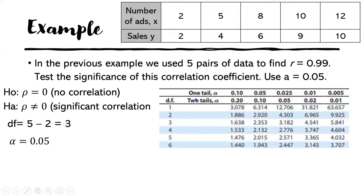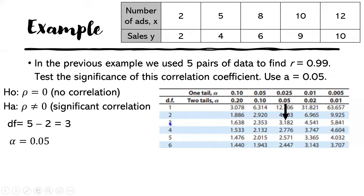We will use the t-distribution table. If the symbol in Hₐ is less than or greater than, look at the one-tail row for the alpha level. If the symbol in Hₐ is not equal to, look at the two-tails row. Since our Hₐ uses not equal to, we look at 0.05 in the two-tails row with degree of freedom 3.